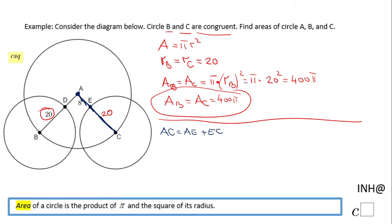Basically we have AE is 8, that was given. EC is 20, we found out because circles B and C are congruent. So AC will be 28, and like I said, the radius of circle A is this segment AC, which is 28.